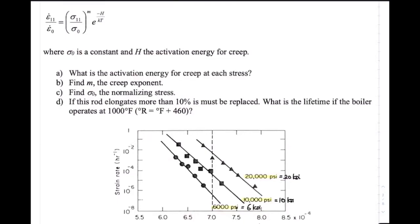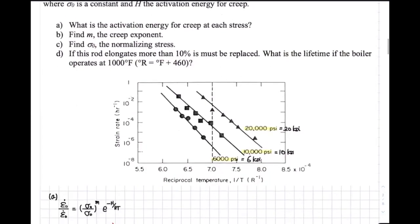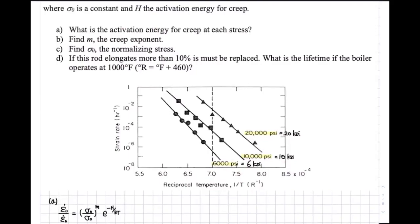In order to solve for M, H, or sigma naught and the strain rate, we have a graph with the strain rate on the y-axis in log scale — like 10 to negative two, 10 to negative four, something like that. The x-axis is temperature, specifically one over T, in the Rankine scale. We have three stress lines: 20 KSI, 10 KSI, and 6 KSI.